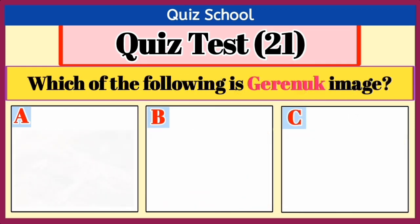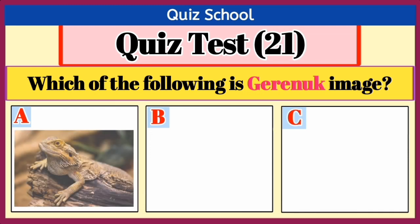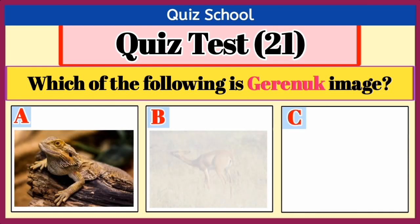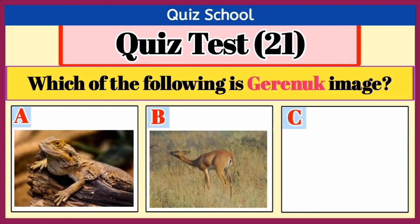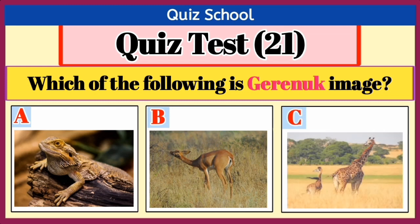Question number 2. Which of the following is the jerrynock image? Option A, Option B, or Option C. Right answer is Option B.